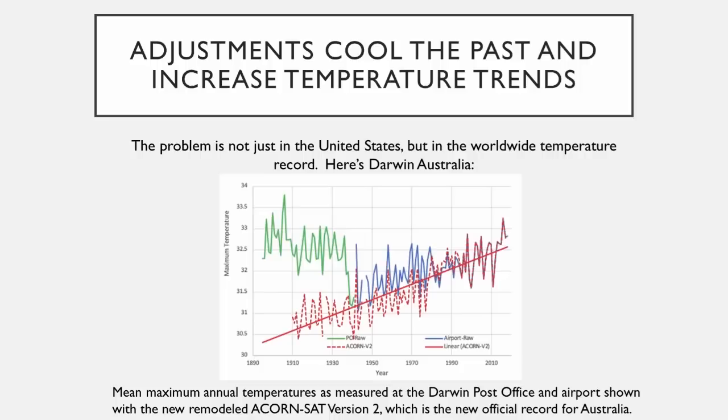Here, for example, is Darwin, Australia. In the green you can see the original record, then it goes to the blue after adjustments. They chopped off part of the green between 1890 and 1910 because they decided the data wasn't valid for some reason. And the data after 1910 up to about 1940, they lowered. So you get this new trend that looks like it's going way up. But that's not reality — that is simply an after-the-fact adjustment. That is not a real measure of the climate.